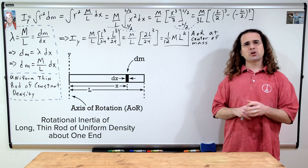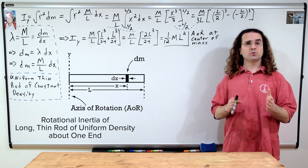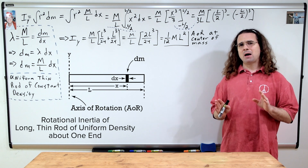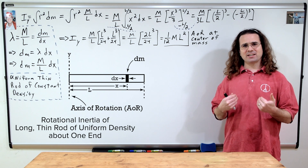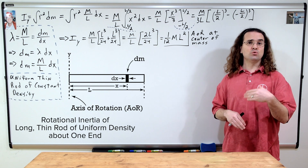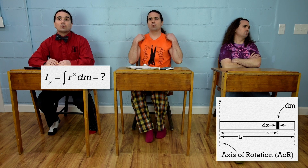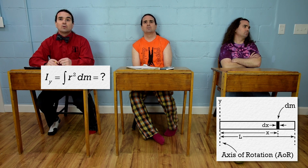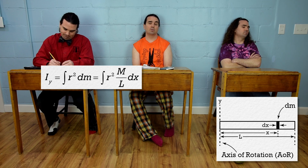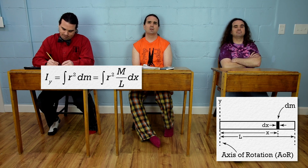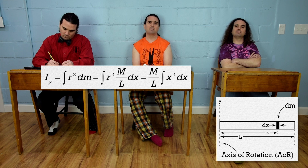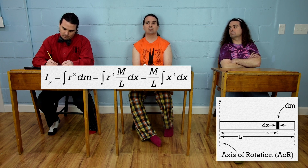Bobby, please determine the rotational inertia of a uniform rigid rod about one end. So it's the same object — I've just moved the axis of rotation from the center of mass to one end of the rod. It's the same integral but with different limits. We can start from the middle of the previous example: the rotational inertia about the y-axis equals the total mass of the rod divided by the length of the rod times the integral of x-squared with respect to x.